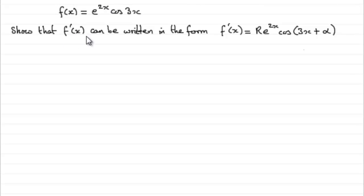We've got to show that f dash x can be written in the form f dash x equals r e to the power 2x cos of 3x plus alpha, where r and alpha are the constants we found in the first part of the question.